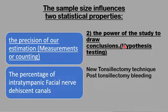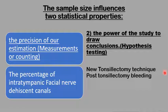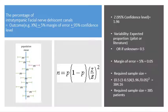The other important aspect is the power of the study to draw conclusions and test a hypothesis. For example, if we are trying a new tonsillectomy technique and measuring the rate of bleeding with the standard method and the new technique and comparing the two rates, if we have a good study power by increasing the sample size, we'll be able to see a difference between the two techniques if that difference actually exists.